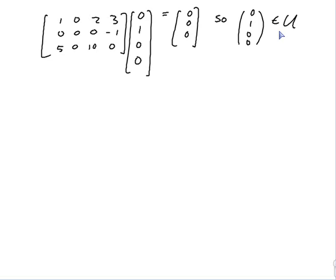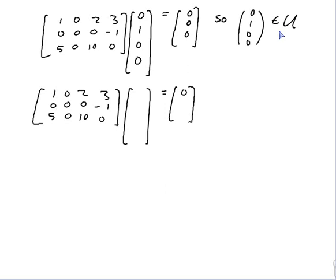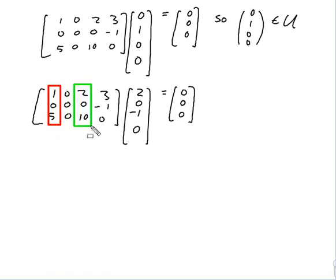For a third vector, I can try to cancel columns. Two times the first column and minus one times the third column: 2×1 - 1×2 = 0, and 2×5 - 1×10 = 0. So taking 2 of the first column and -1 of the third column gives the zero vector, meaning (2, 0, -1, 0) is in U.